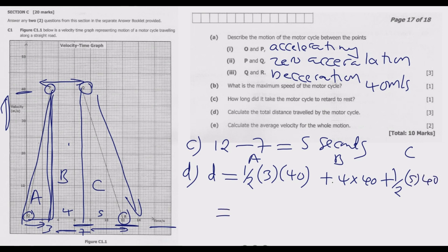Simplifying: half of 3 times 40 gives 20 times 3 which is 60. Plus 4 times 40 equals 160. Plus half of 5 times 40 gives 20 times 5 which is 100. Total distance is 60 plus 160 plus 100 equals 320 meters.